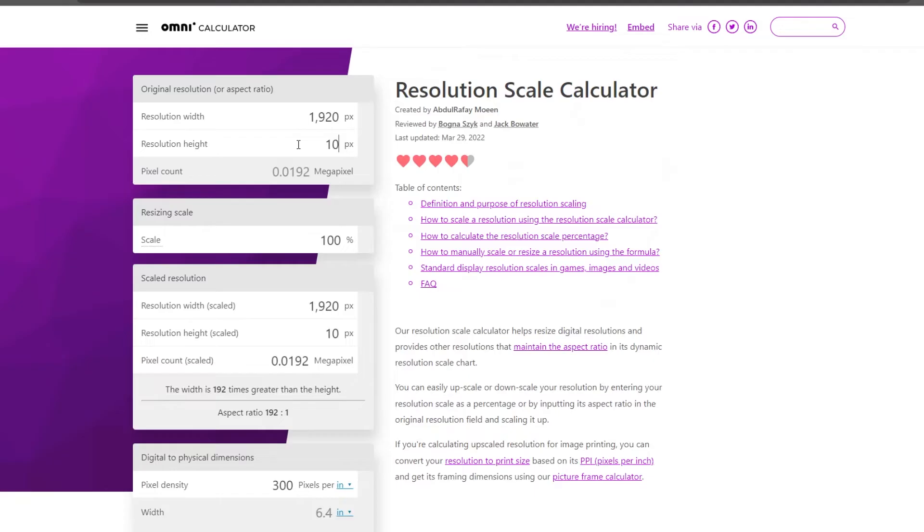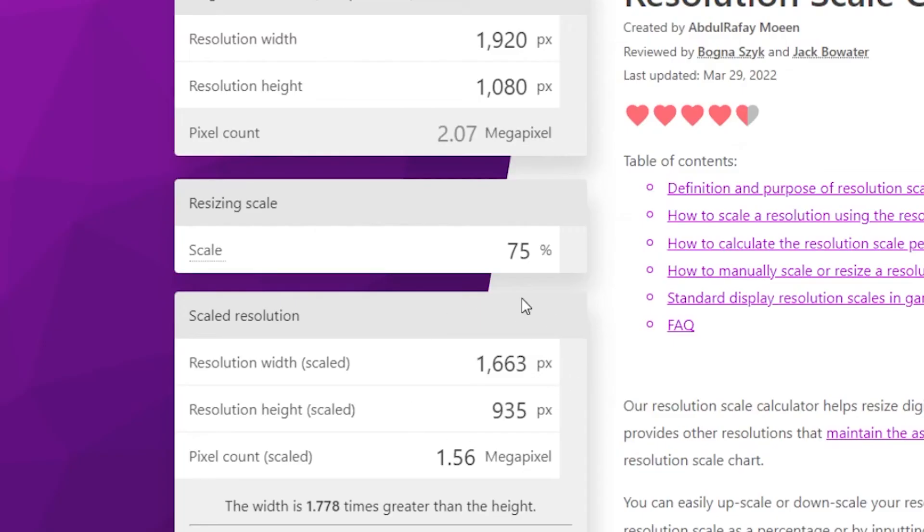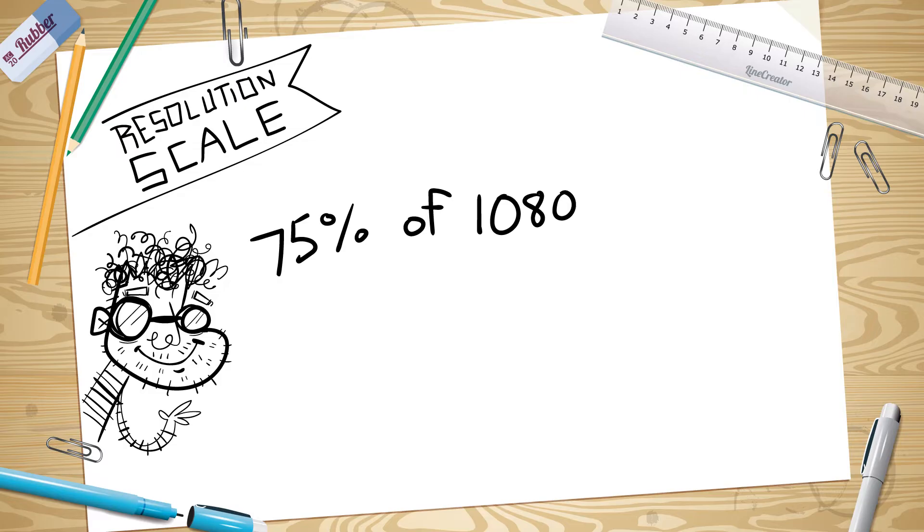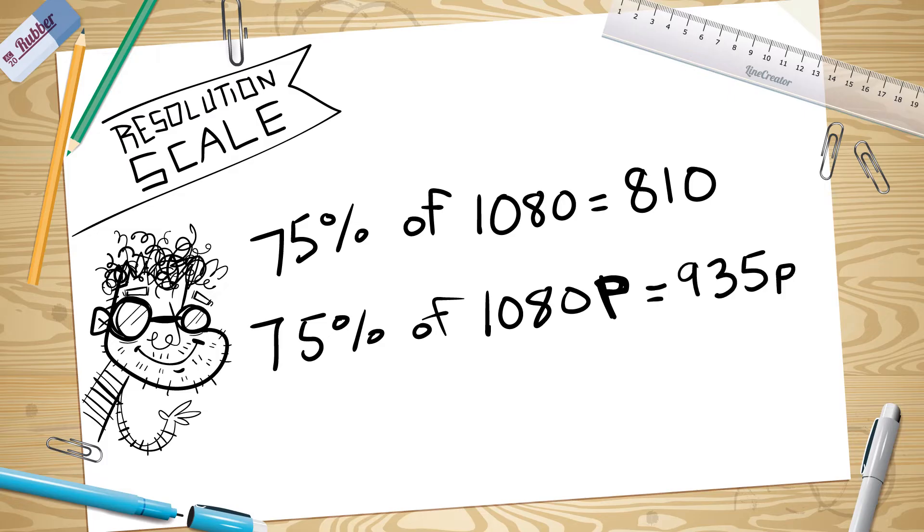So, let's figure this out. 1080p is 1920 by 1080, and we're going to set a resolution scale of 75%. We want 75% of the total pixels of the 1080p resolution. That means the new dimensions that will give us 75% of 1080p are 1663 by 935. So, there you go. 75% of the number 1080 is 810. But 75% of 1080p is actually 935p.